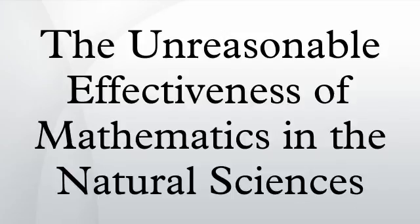The unreasonable effectiveness of mathematics in the natural sciences is the title of an article published in 1960 by the physicist Eugene Wigner.